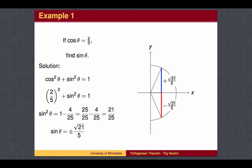In order to find the precise value for sine of theta, we would need to be given information about the location of the angle. Since cosine of theta is positive, the angle must be either in the first quadrant or the fourth quadrant.